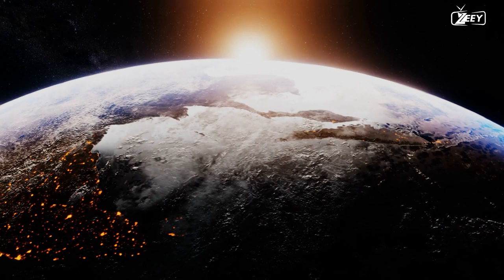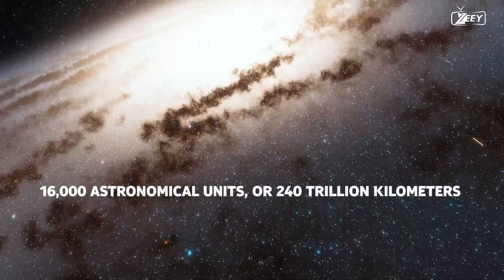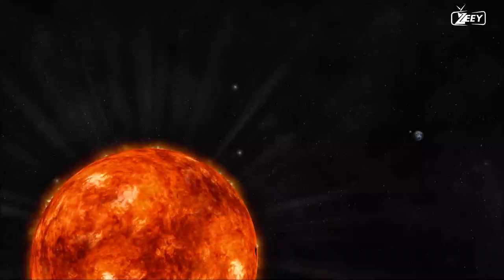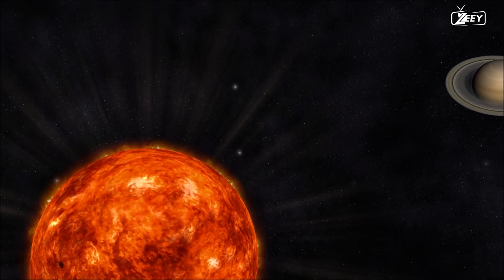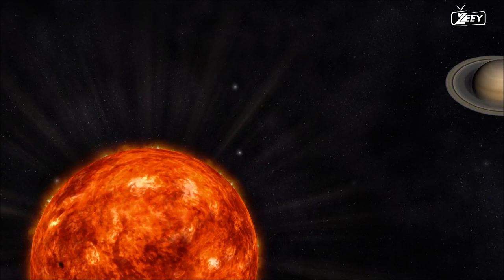In fact, it will pass by at a distance of approximately 16,000 astronomical units, or 240 trillion kilometers, still relatively close in astronomical terms. The diameter of the solar system is 1,921 astronomical units, so it will remain distant from us.